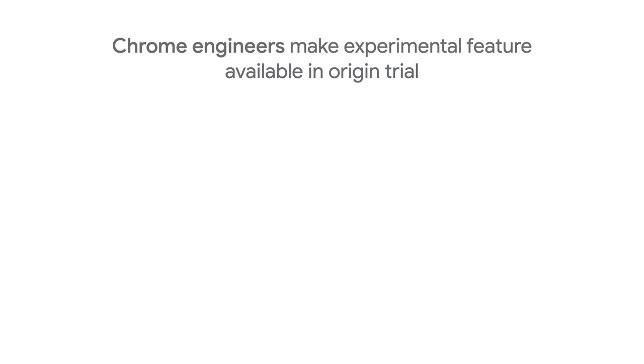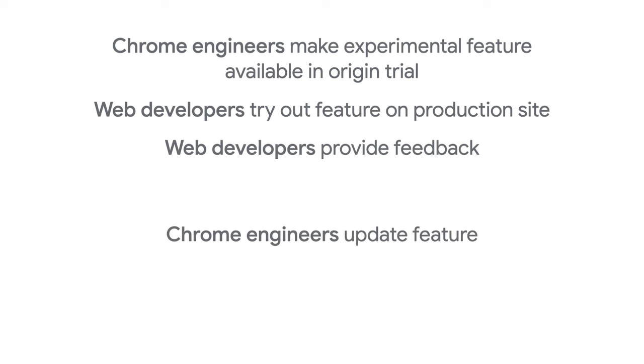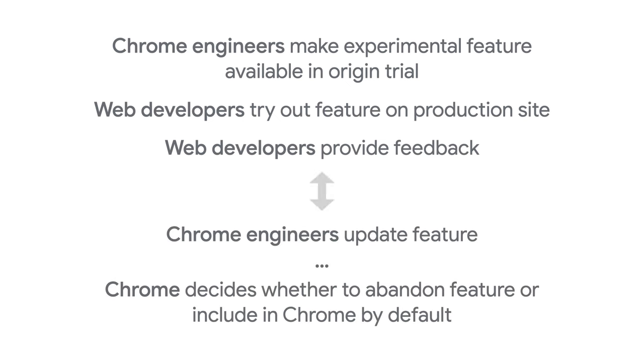You might have heard of Chrome's Origin Trials. These are a way for developers to test an experimental web platform feature and for the Chrome team to get feedback and rapidly iterate design. Origin Trials allow Chrome to make an experimental feature available for a limited time to get feedback, but only to sites that opt in to trying it out. This enables web developers to test experimental features in production with real users, not just their developer team, and also allows Chrome engineers to quickly iterate feature design in response to feedback.